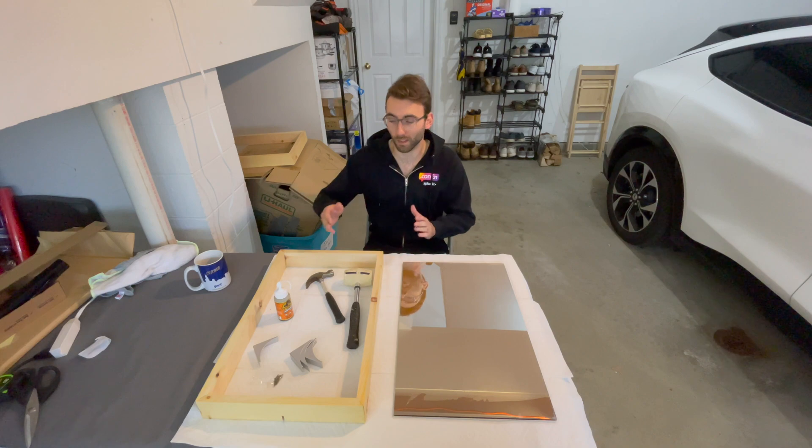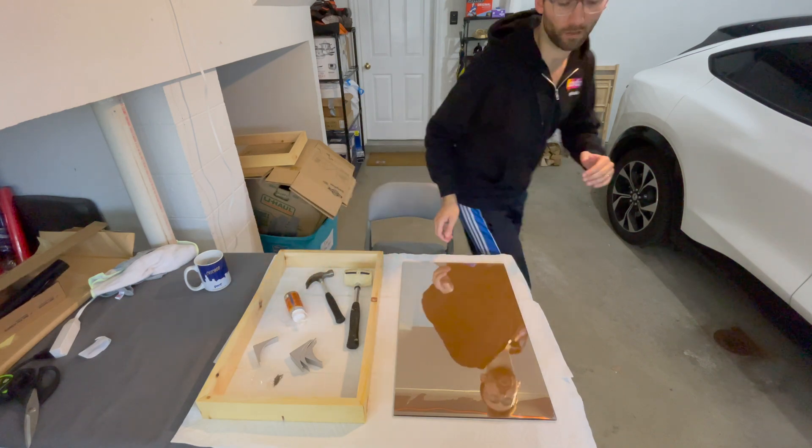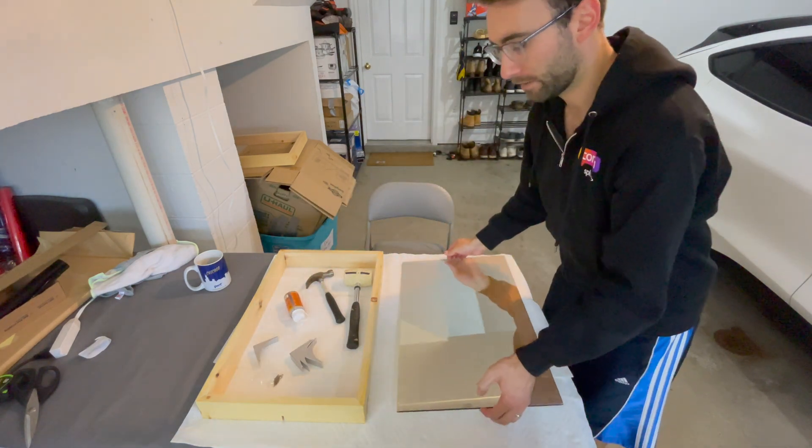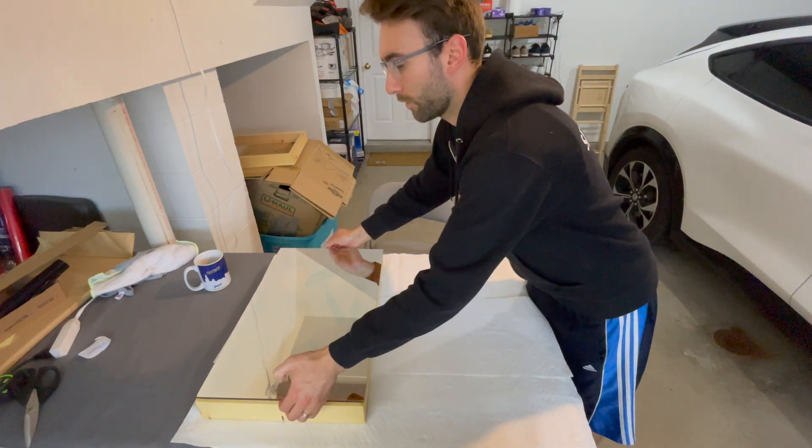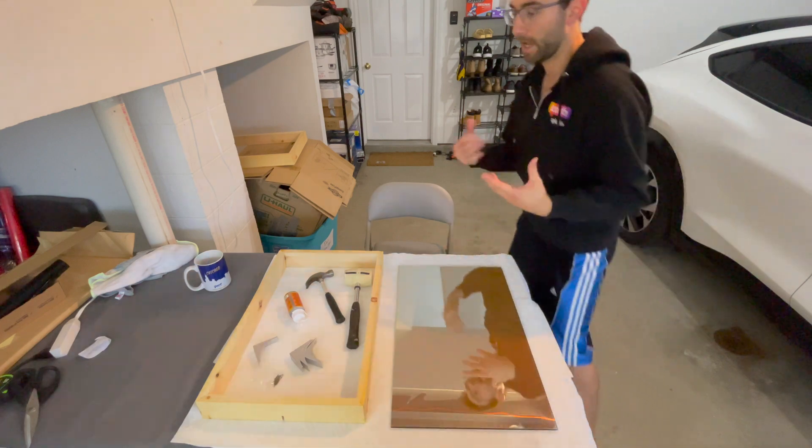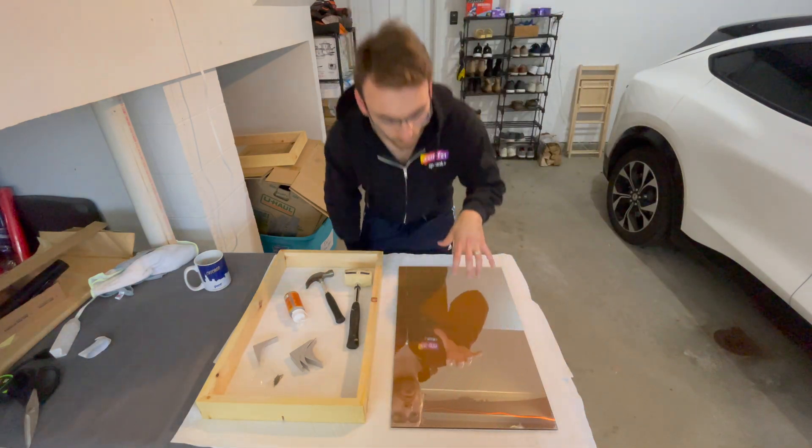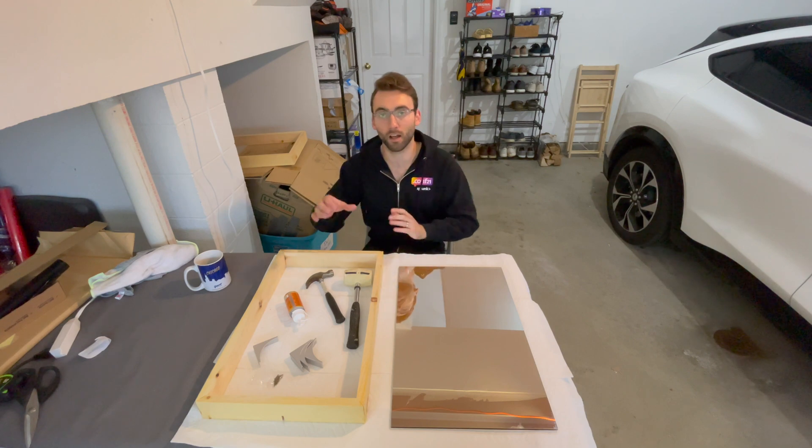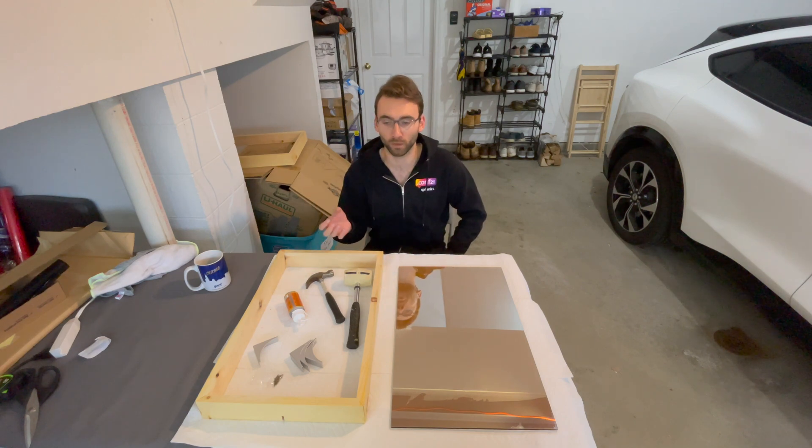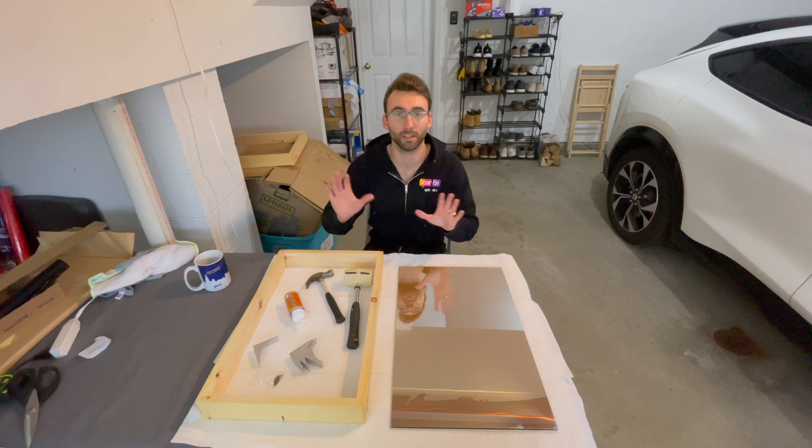Basically what we're going to be doing is we are going to be gluing this mirror panel onto our wooden frame, like so. And this is really the basis around how smart mirrors work, with a one-way mirror panel hiding the hardware and the display behind it so that only the display comes through and then otherwise it's reflective.